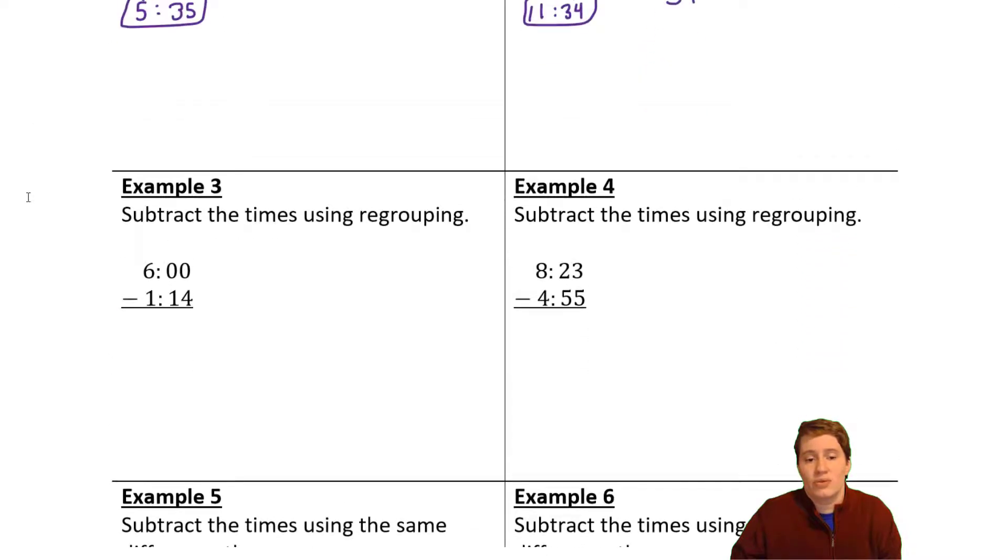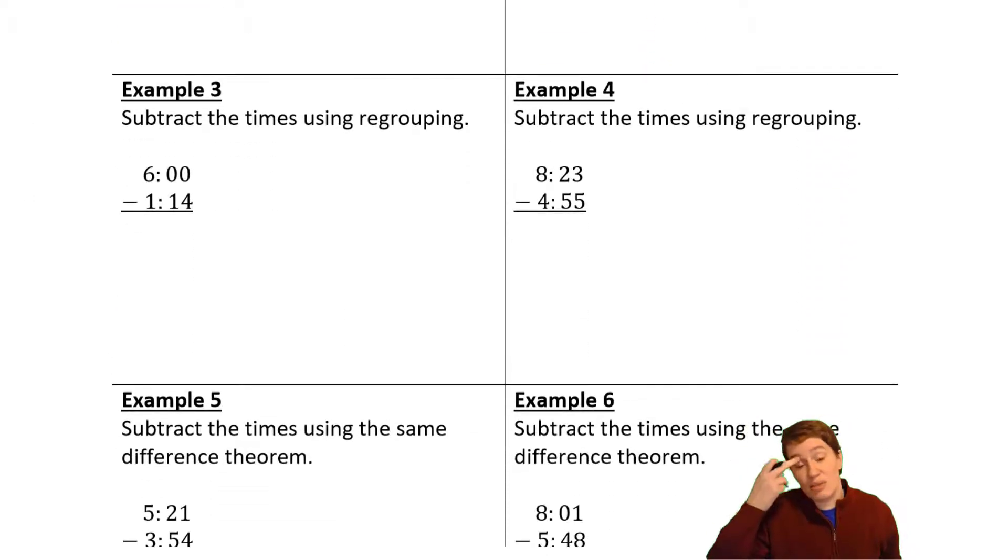Examples three, four, five, and six are all subtracting. The Math UC workbook gives us kind of two different strategies to use for subtracting. And so you'll want to probably pick out which one you feel like is easier for you or that you like better. So the first way of doing it is using regrouping, which is basically like how we borrow with normal subtraction.